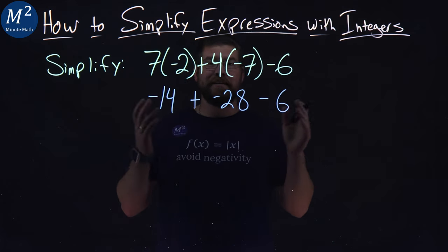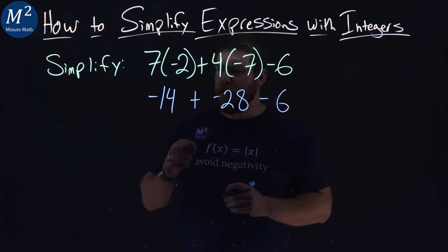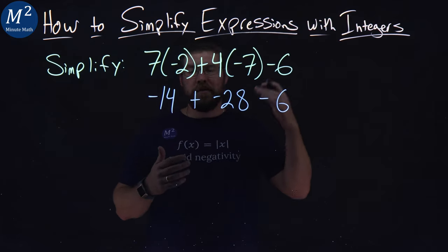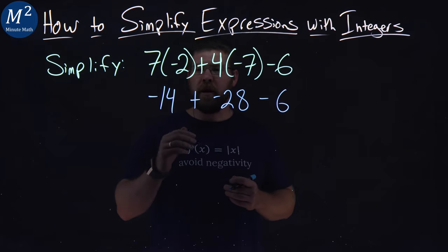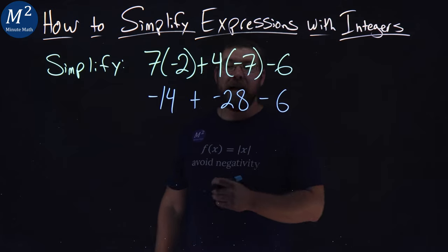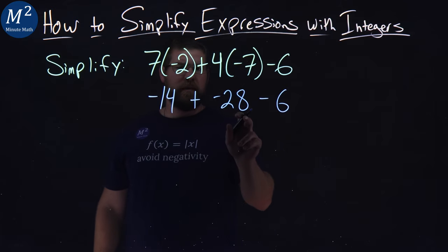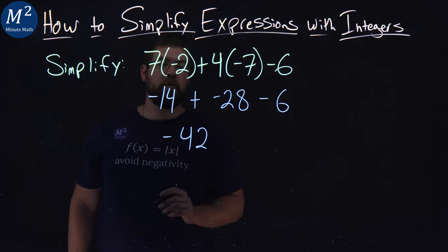What's left is addition and subtraction. That's the same level on the order of operations, so let's go left to right. Negative 14 plus negative 28. That comes out to be negative 42.